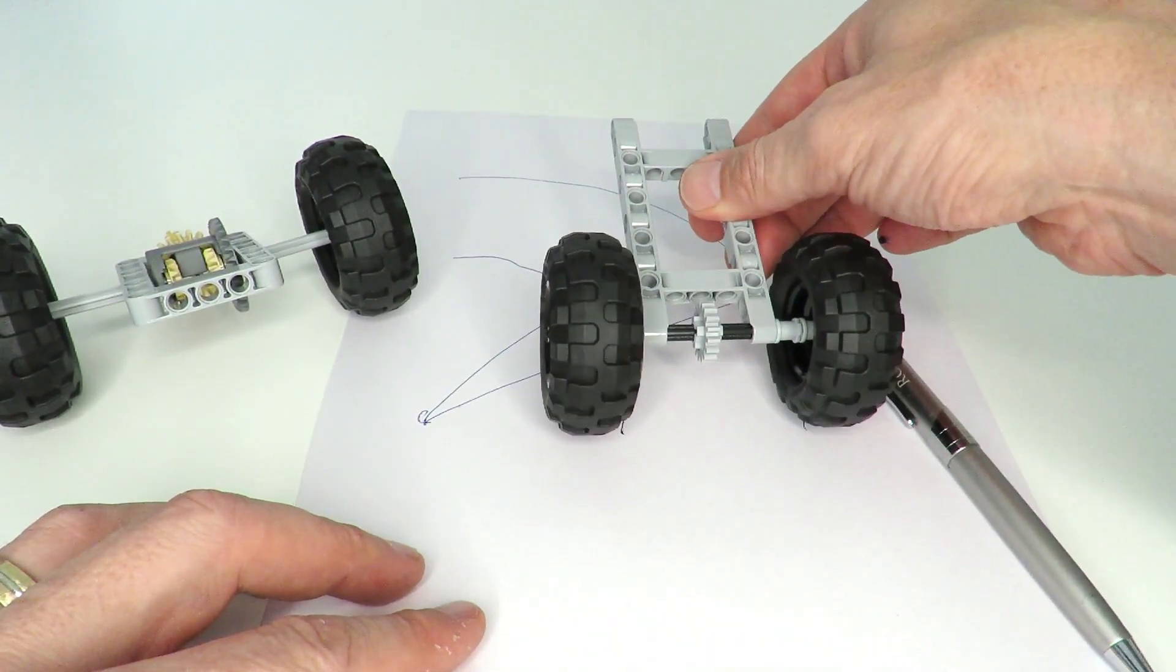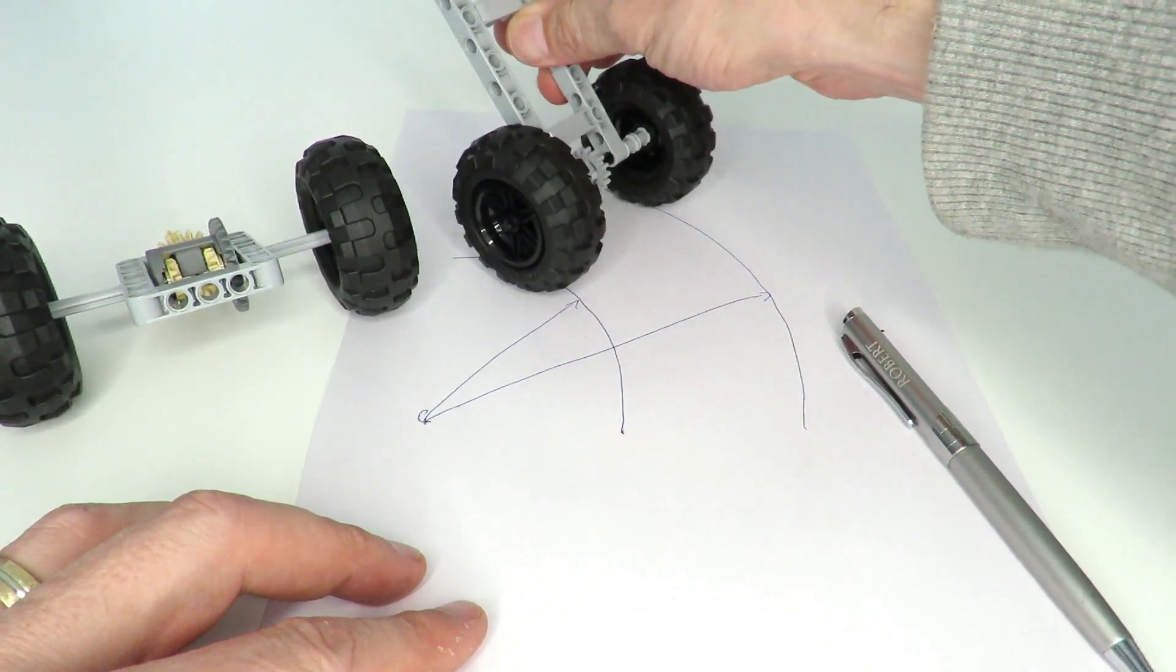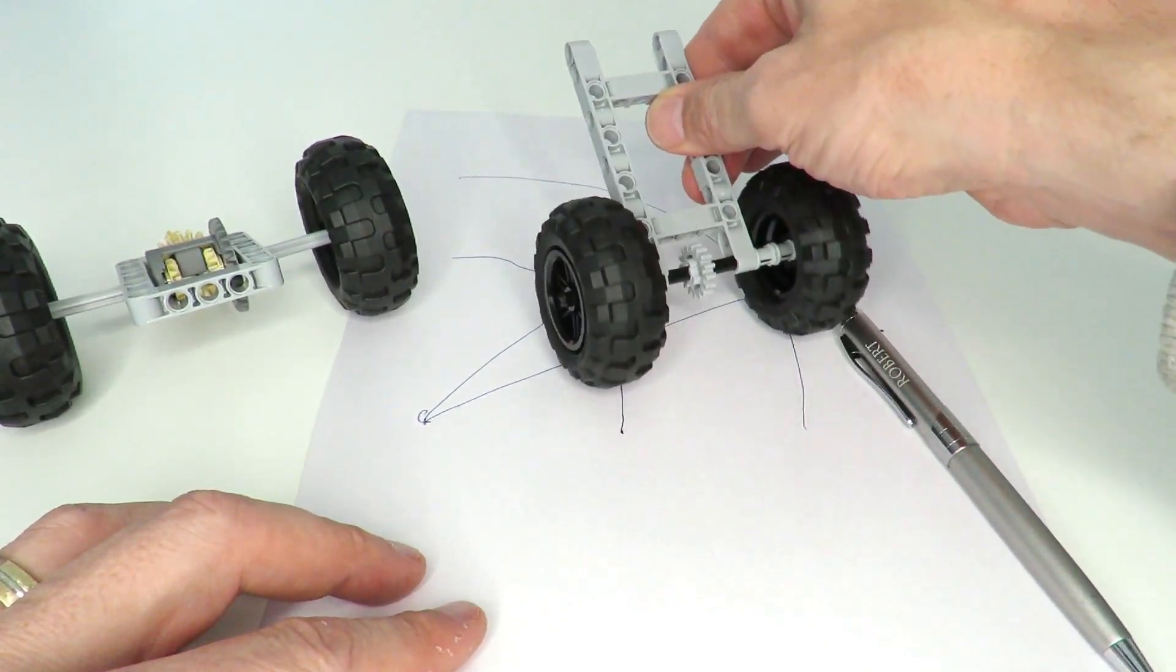What that means for the vehicle is that invariably, the wheels will have to have some slippage or loss of traction going around the corner.